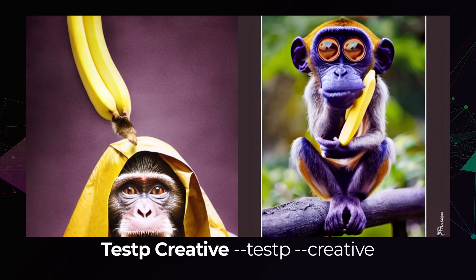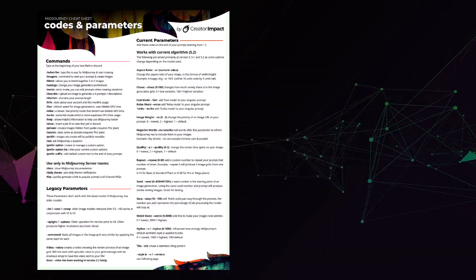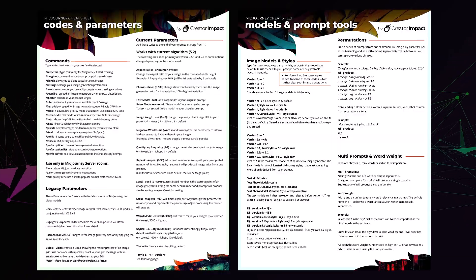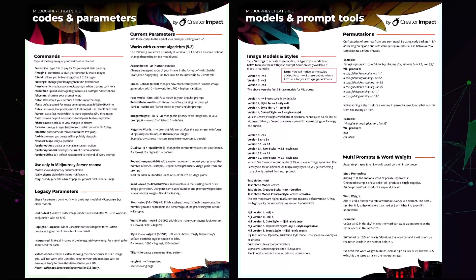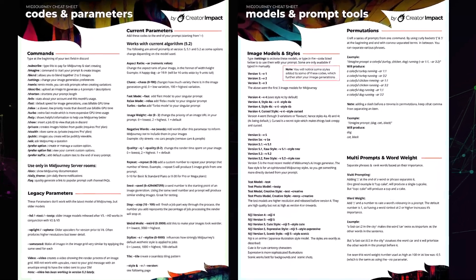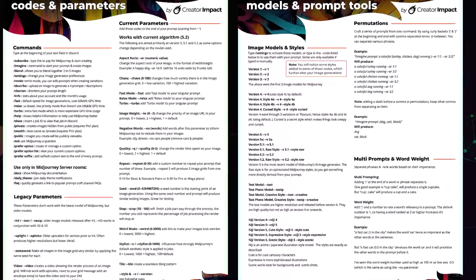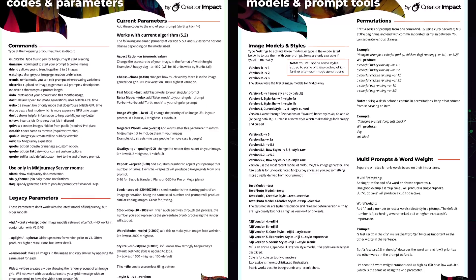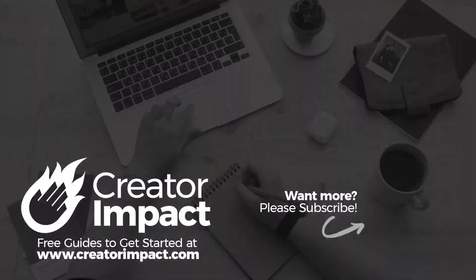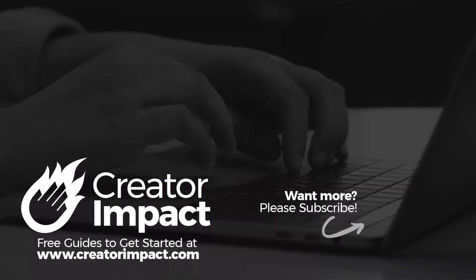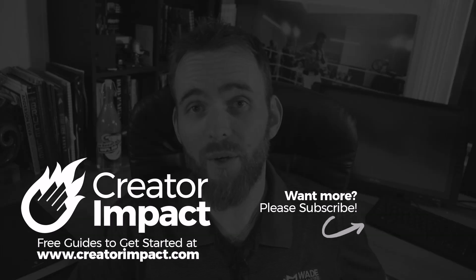That's it for today. Don't forget to check out that PDF cheat sheet — there are two pages with a whole bunch of information, not just models and styles but also codes, parameters, and everything. That is in the description below. Just simply sign up for my newsletter and you'll get it sent to your email. You can subscribe and unsubscribe at any time.